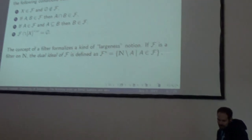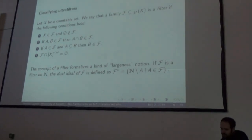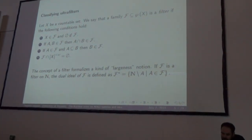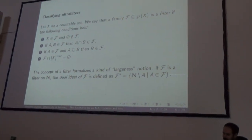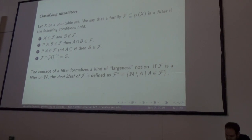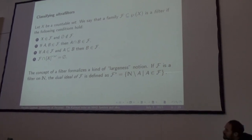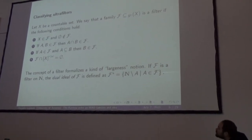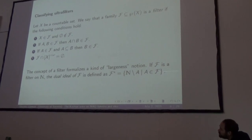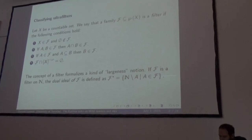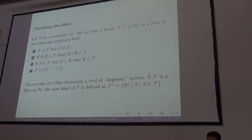The first application is classifying ultrafilters. We have the dual notion of an ideal, which is a filter. A family is a filter on X if X is in the family, the empty set is not, it's closed under intersections, closed under supersets, and for this talk, no finite sets are in it.